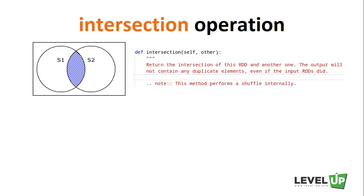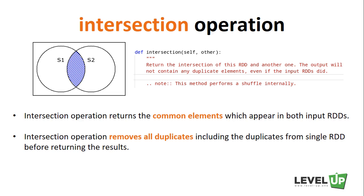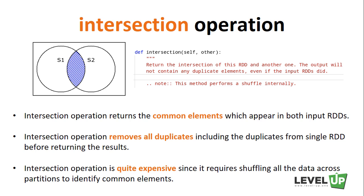The next operation we'll talk about is Intersection, which returns the common elements which appear in both input RDDs. Intersection will also remove all duplicates including the duplicates from a single RDD before returning the results. Keep in mind that the Intersection operation is quite expensive since it requires shuffling all the data across partitions to identify common elements.